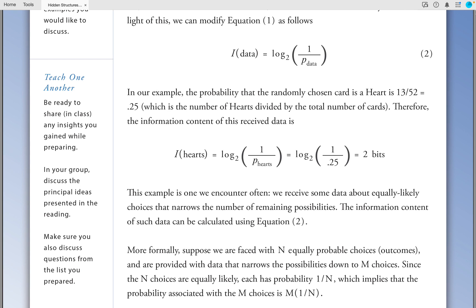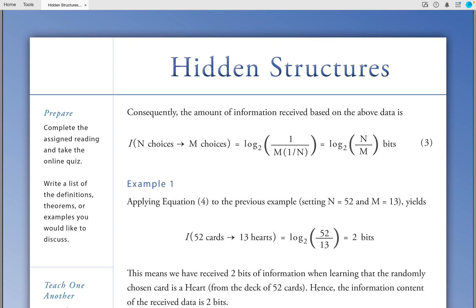More formally, suppose we are faced with n equally probable choices or outcomes and are provided with data that narrows the possibilities down to m choices. Since the n choices are equally likely, each has probability 1 divided by n, which implies that the probability associated with the m choices is m times 1 over n. Consequently, the amount of information received based on the above data is the following: log base 2 of n divided by m bits.